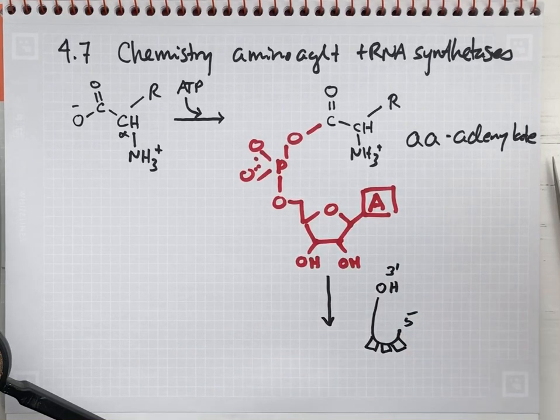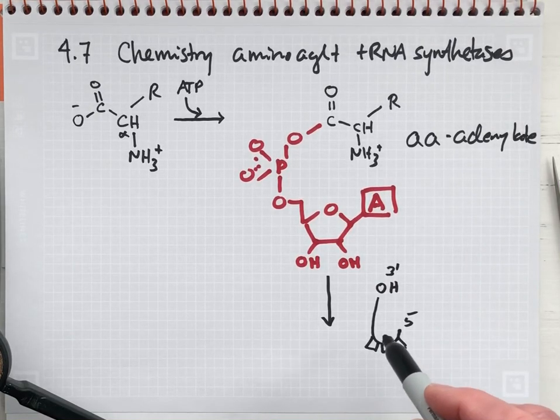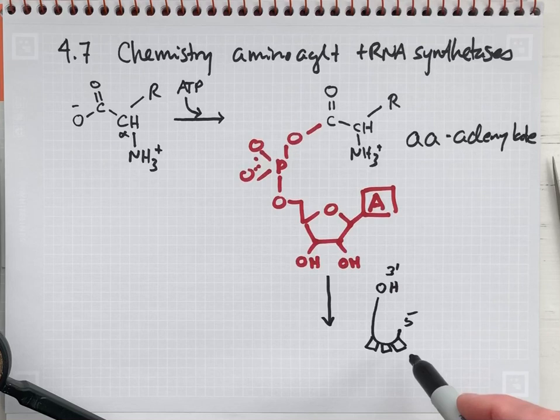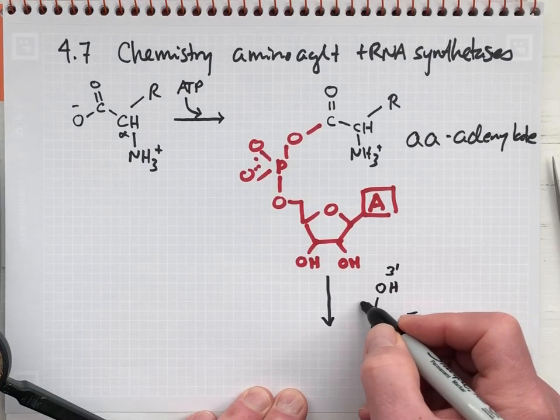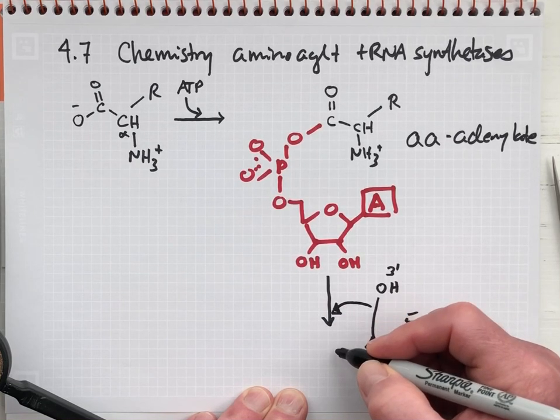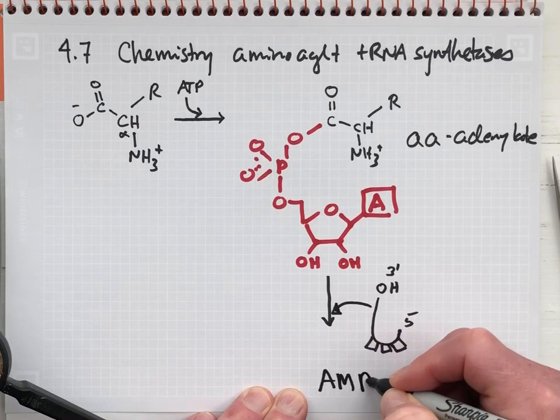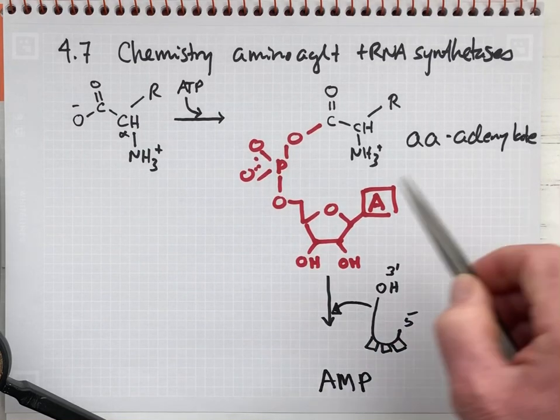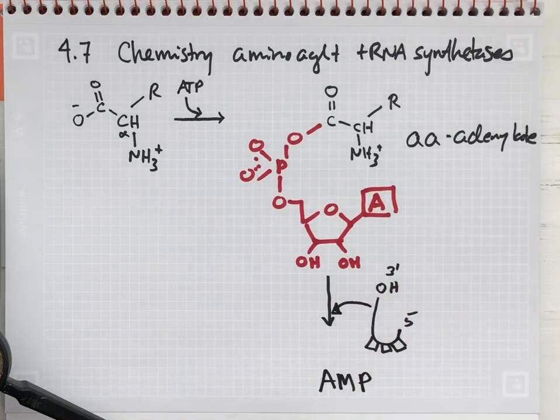And the enzyme can differentiate the cognate tRNA from all the other possible tRNA that can act as substrates. And this is going to become part of the chemical structure. And we're going to release this as product AMP. So this unit right here is going to be the leaving group in the second reaction.